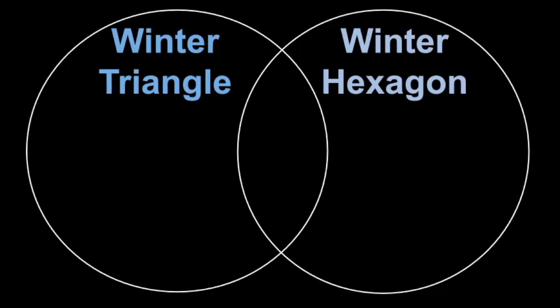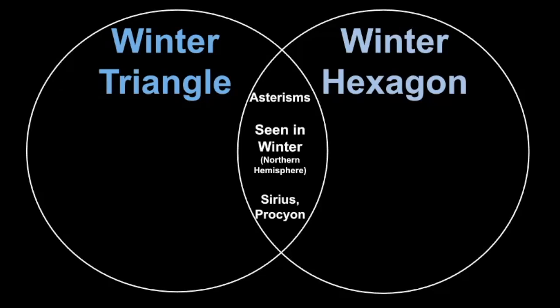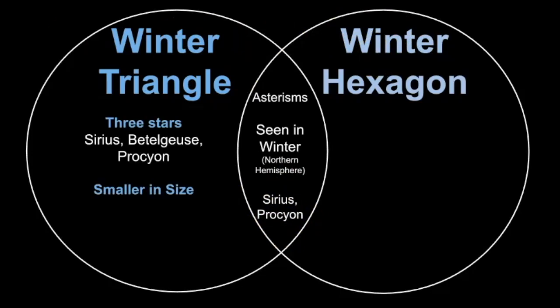In the next portion of the video, I'm going to use a Venn diagram to compare both of these objects in the sky. Starting with similarities: both the winter triangle and the winter hexagon are asterisms — not true constellations, but patterns we use to find constellations. They're both seen in the winter for the northern hemisphere, and they both share two stars: Sirius and Procyon. The winter triangle is made of only three stars — Sirius, Betelgeuse, and Procyon — and is smaller in size. I recommend starting with the winter triangle, then working toward the larger winter hexagon.